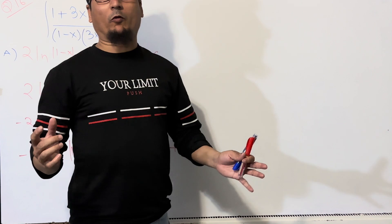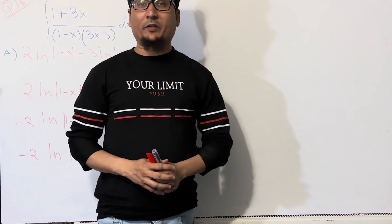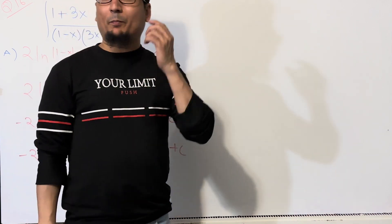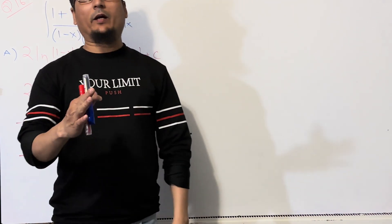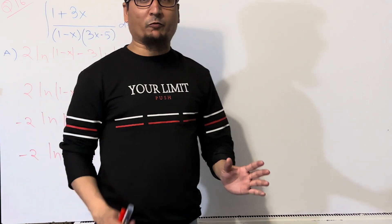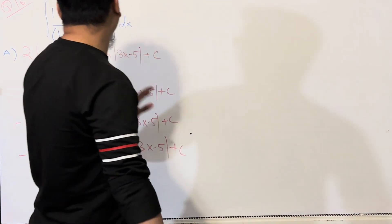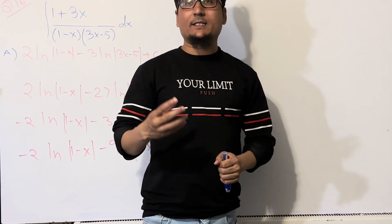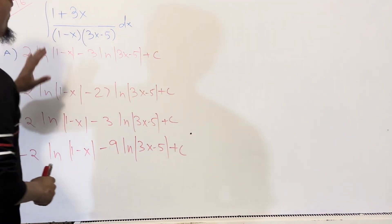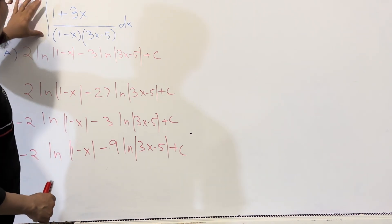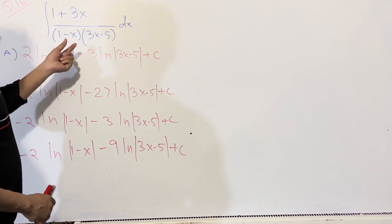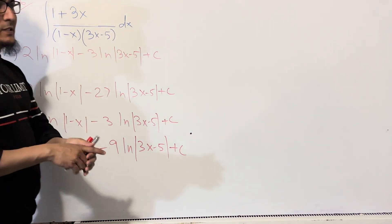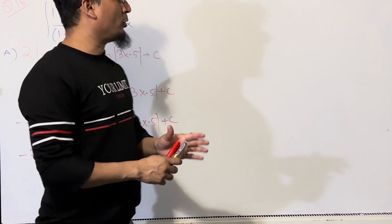Assalamualaikum, bismillahirrahmanirrahim. In the name of Allah, the most beneficial and the most merciful. I'm solving the past paper of AP Calculus 2018. I already solved from question 1 to question 15. Now I'm going to move on to question number 16, which is a partial fraction question. You have to find the integration of (1 + 3x) / (1 - x)(3x - 5) dx.